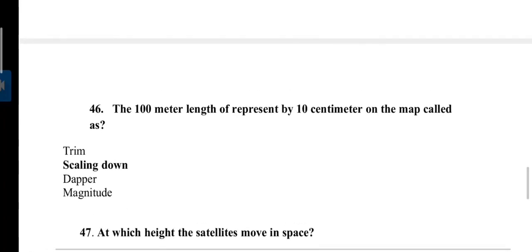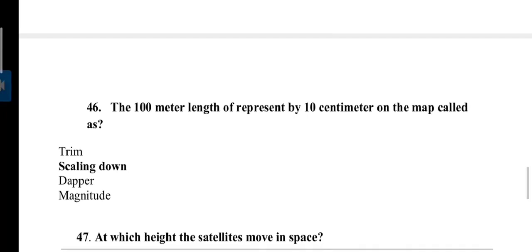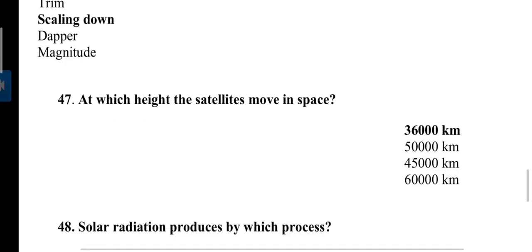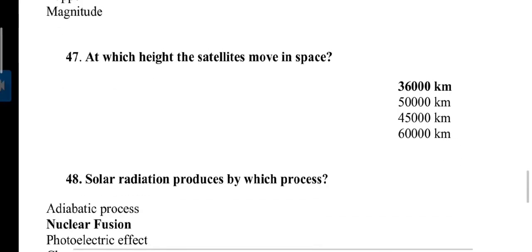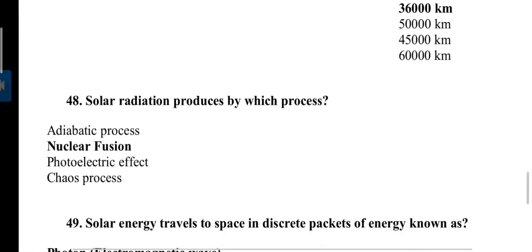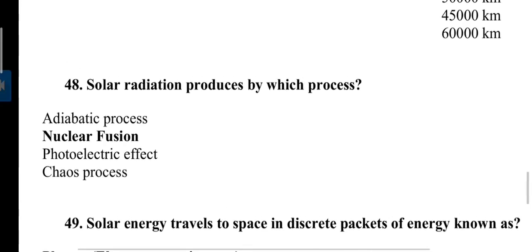The 100 meter length represented by 10 centimeters on the map is called scaling down. These are all terms related to map. Next question: At which height do satellites move in space? Answer is 36,000 kilometers above the earth's surface.